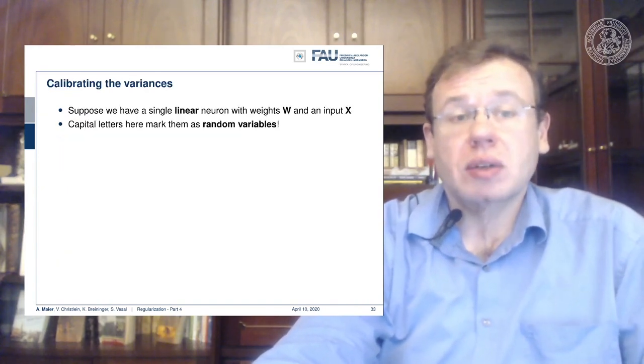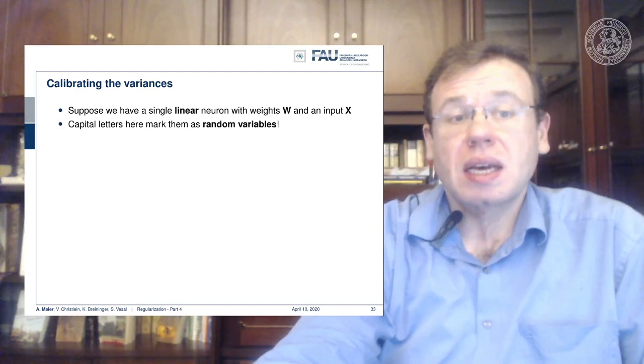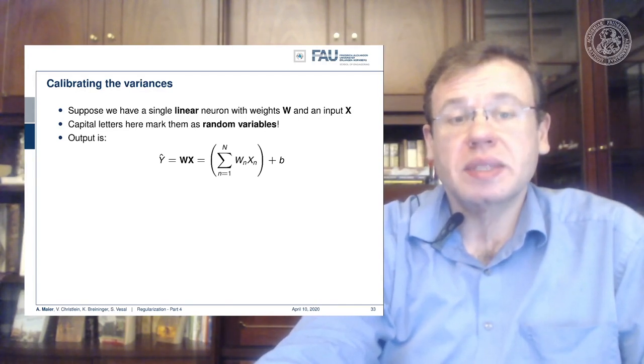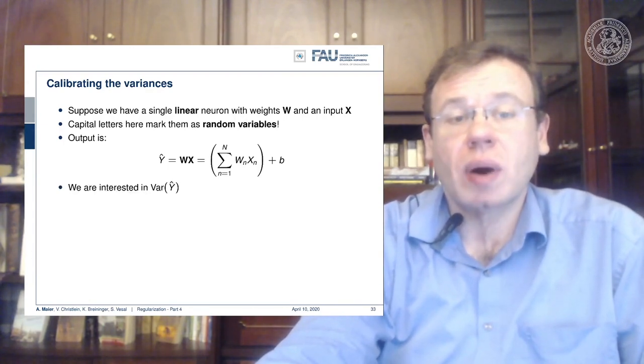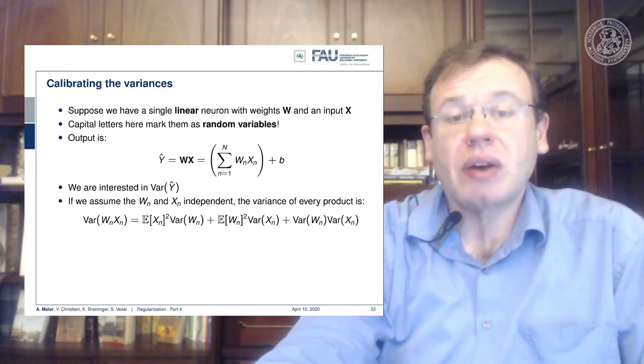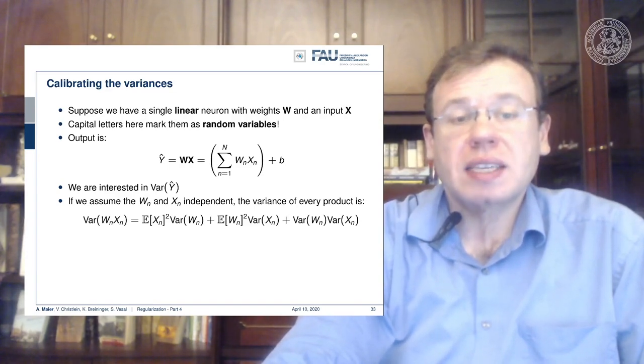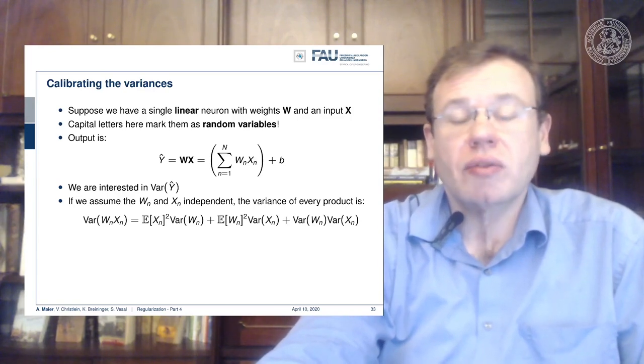Now you may wonder how can we calibrate those variances. Let's suppose we have a single linear neuron with weights W and input X. Remember that the capital letters here mark them as random variables. Then you can see that the output is W times X, this linear combination of the respective inputs plus some bias. Now we are interested in the variance of y hat. If we assume that W and X are independent, then the variance of every product can be computed as the expected value of X to the power of 2 times the variance of W plus the expected value of W to the power of 2 times the variance of X, and then you add the variances of the two random variables.